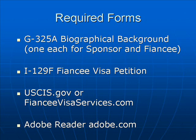The G325A biographical background form is required for each person, so the sponsor will fill out one and the fiancé another. Basically, it's asking for basic information about your background — where you live, where you've lived, how many times you've been married, etc. One thing that is special about these forms is that they require an original signature; it cannot be a Xerox copy or a fax signature. So this form, the G325A, should be completed and then sent to your fiancé for her actual original signature.